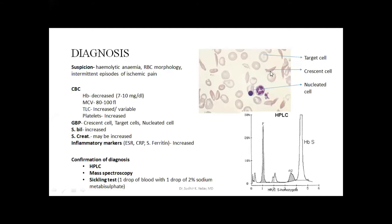Some RBCs can have full-fledged sickle cells — also called crescent cells or moon cells. This is hemolytic anemia, so serum haptoglobin is going to decrease. If there is AKI, creatinine may rise.